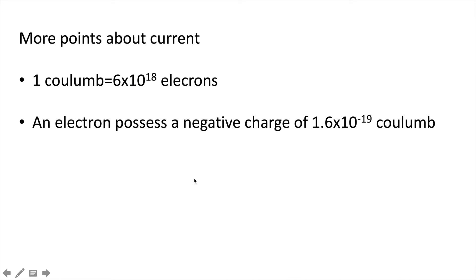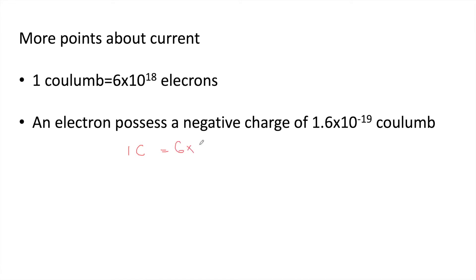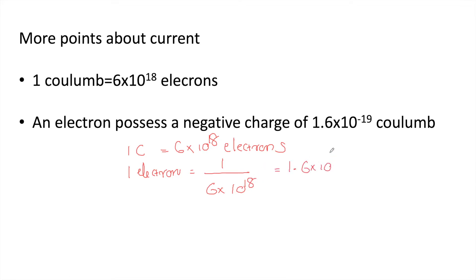One coulomb of charge consists of 6×10¹⁸ electrons. An electron possesses a negative charge of 1.6×10⁻¹⁹ coulombs. So 1 coulomb equals 6×10¹⁸ electrons, and the charge of one electron is 1/6×10¹⁸, which equals 1.6×10⁻¹⁹ coulombs.